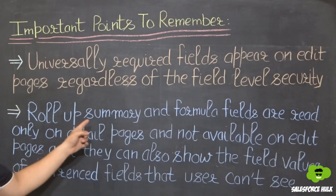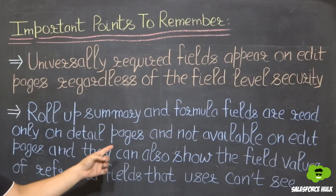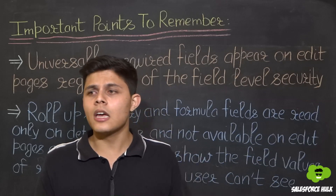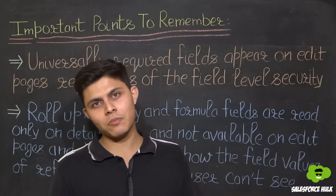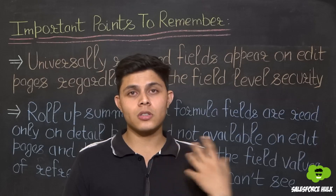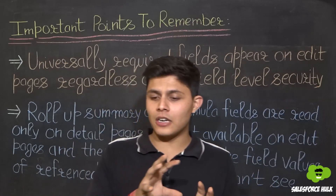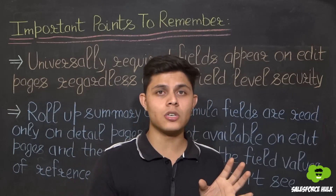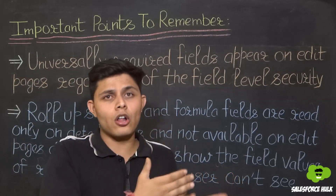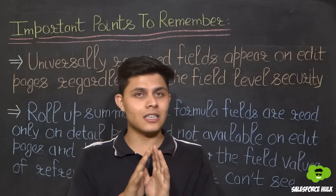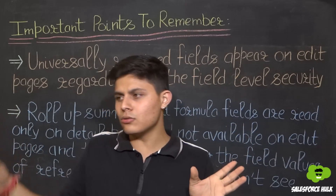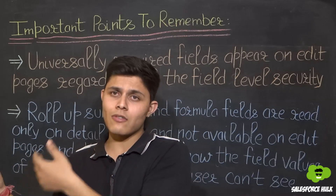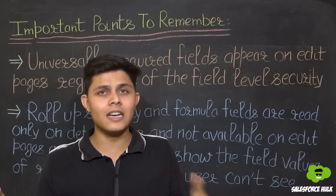The second point is: rollup summary fields and formula fields are read-only on detail pages and not available on edit pages, and they can also show the values of referenced fields that users can't see. Rollup summary and formula fields are basically read-only — they cannot be edited, and they can only be seen on detail pages, not edit pages. Importantly, if a formula field references another field's value and you've hidden that referenced field from a user, the formula field showing that value will NOT automatically be hidden. You need to hide both fields separately — it is never inherited automatically.